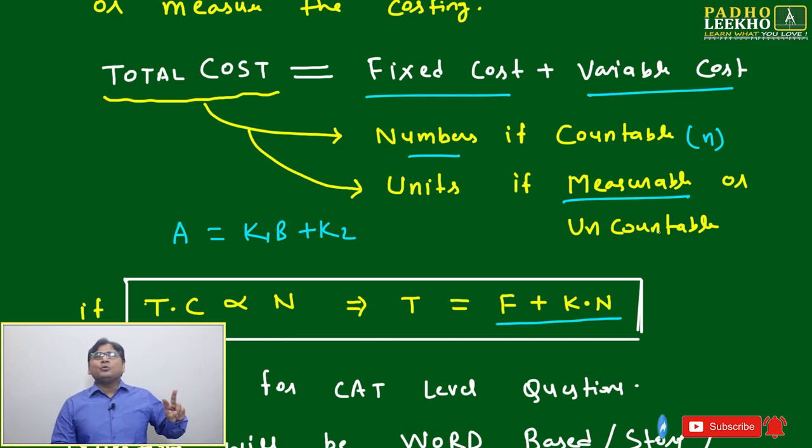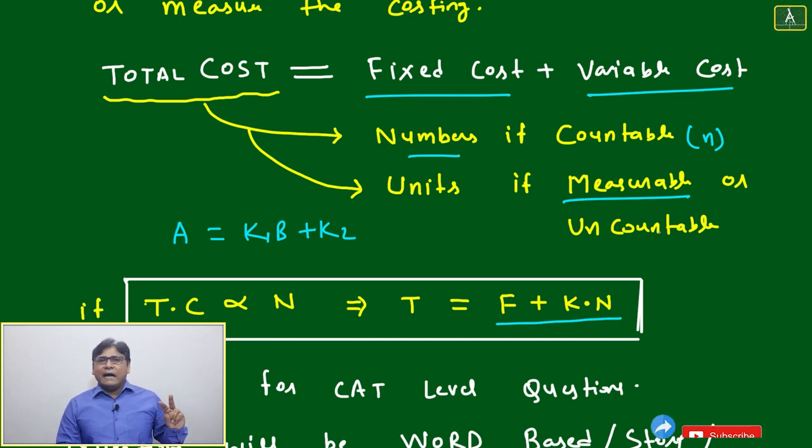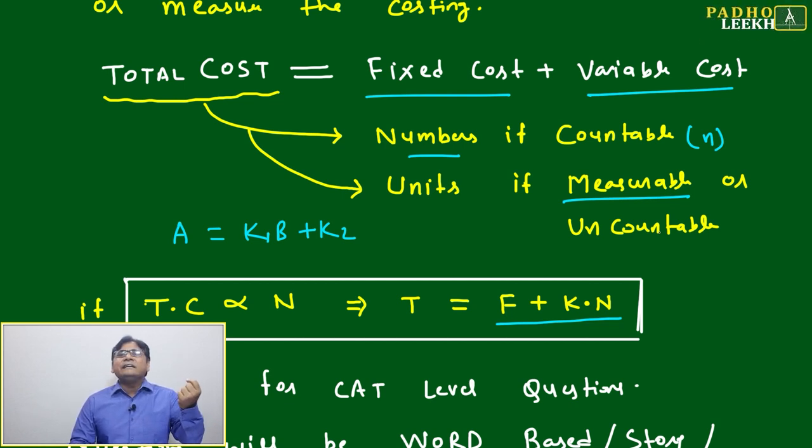Counting means if it will be an integral number or if it is a countable noun. If it is not a countable noun, we have to measure. Like we can't say three sugar—we have to put some unit, either three kg sugar or maybe three tons of sugar.